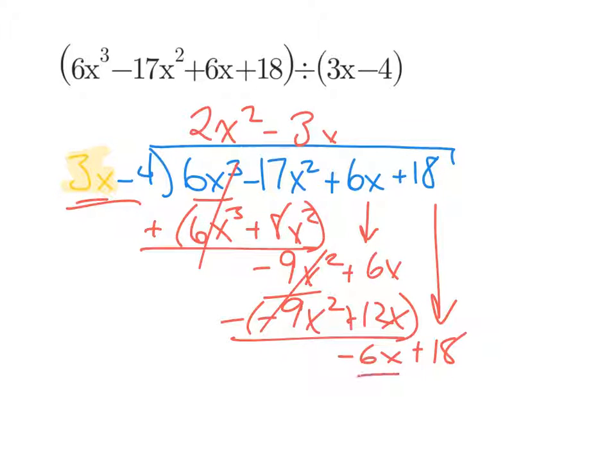Bring down the 18 and repeat it again. 3x to turn it into negative 6x. We'd have to multiply it by negative 2. And then negative 2 times negative 4 is plus 8. When we subtract the whole thing, the negative 6x is canceled. And 18 minus 8 is 10. This time, we have a remainder.